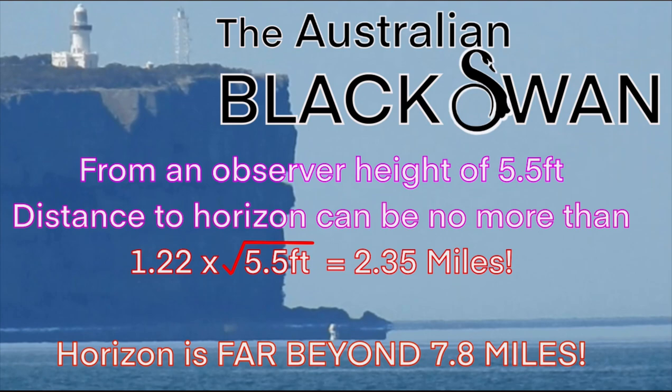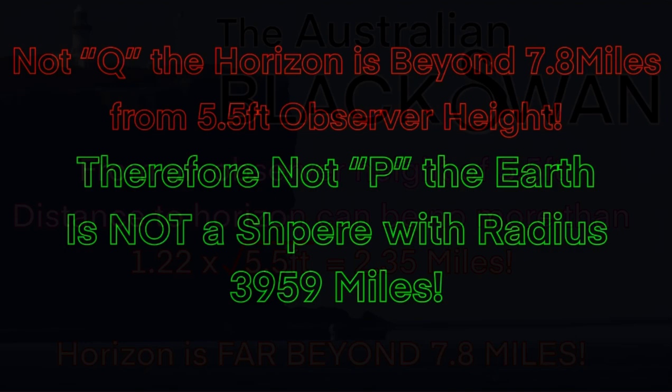Enter the Australian Black Swan. From an observer height of 5.5 feet, distance to the horizon can be no more than 1.22 times the square root of 5.5 feet, which equals 2.85 miles. That is where the horizon — the physical earth curvature — must be on a sphere of radius 3,959 miles from a 5.5-foot observer height. And we can clearly see the horizon is far beyond 7.8 miles.